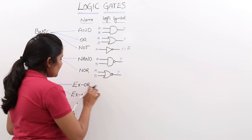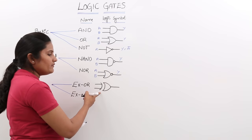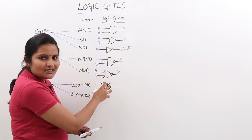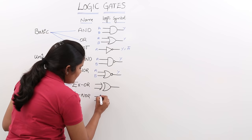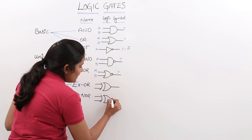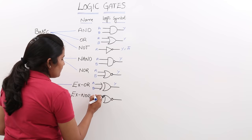Now we are going to the other gates: XOR and XNOR. The logic symbol for XOR gate looks like this. Anywhere you see a symbol like this, you have to identify it as XOR gate. XNOR gate is the complement gate for XOR — if you add a NOT bubble to the XOR symbol it gives you the logic symbol for XNOR gate. Here also we have 2 inputs A and B and 1 output Y.